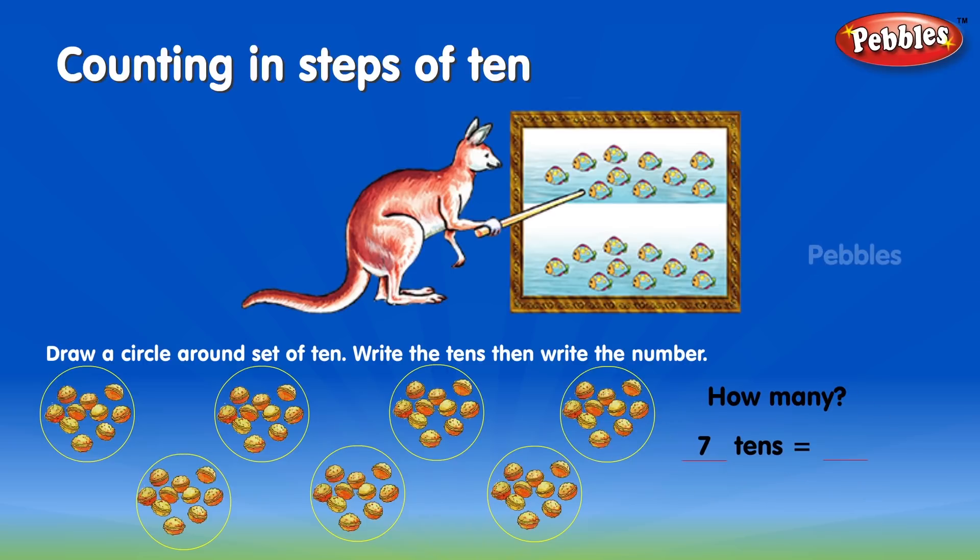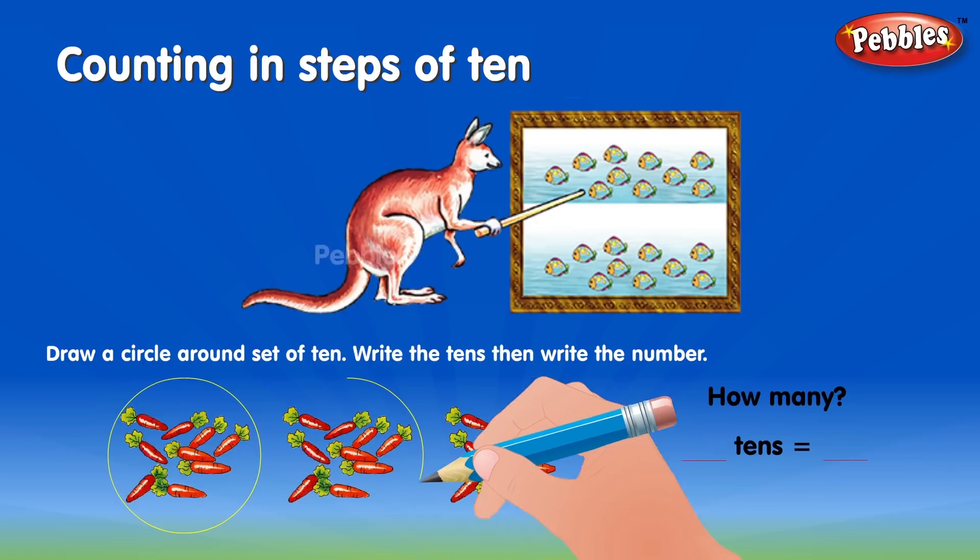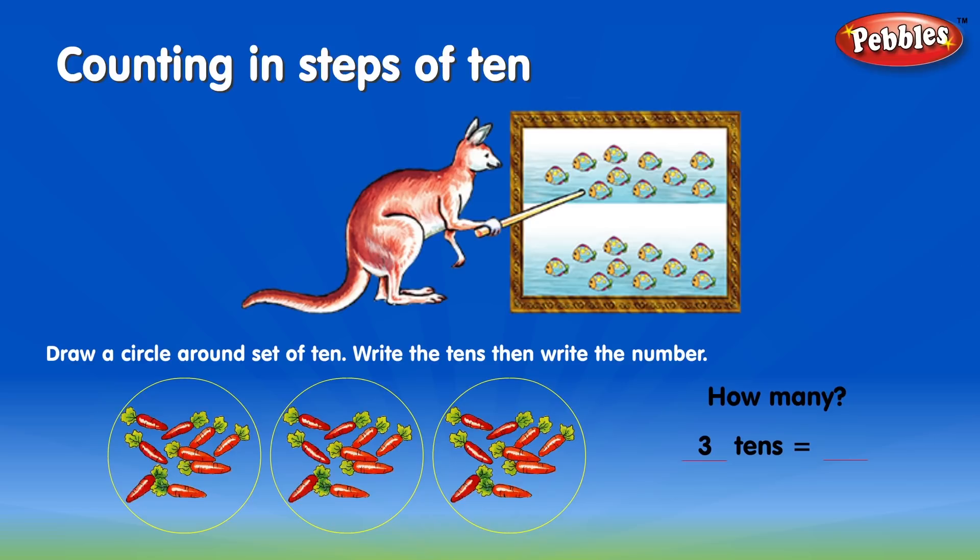7 tens equals 70. Blank tens equals blank. 3 tens equals 30.